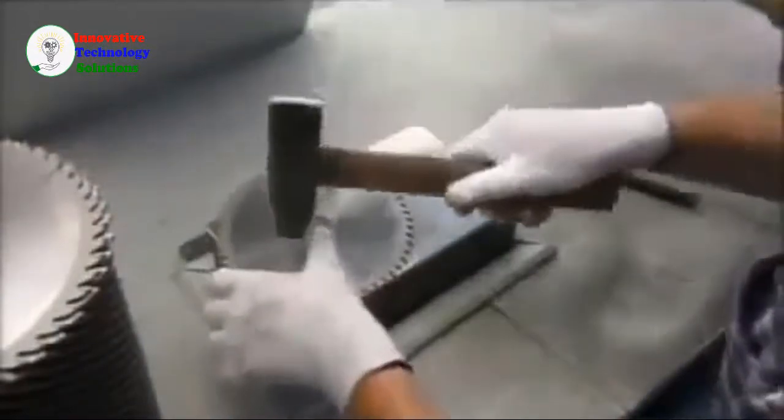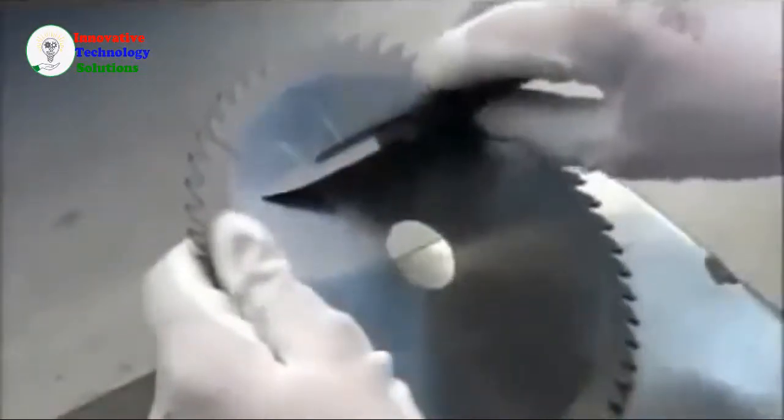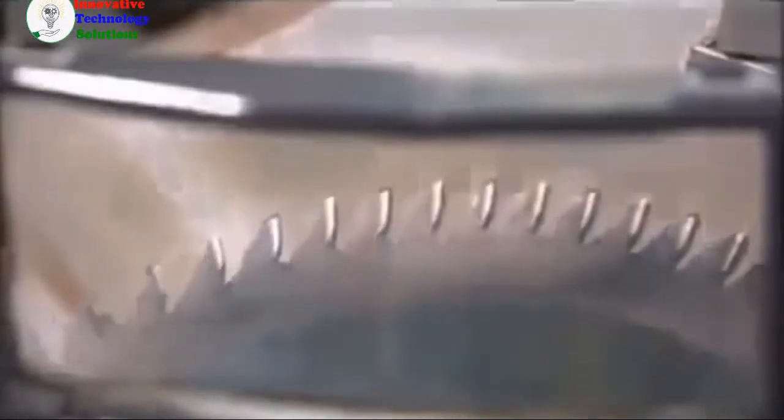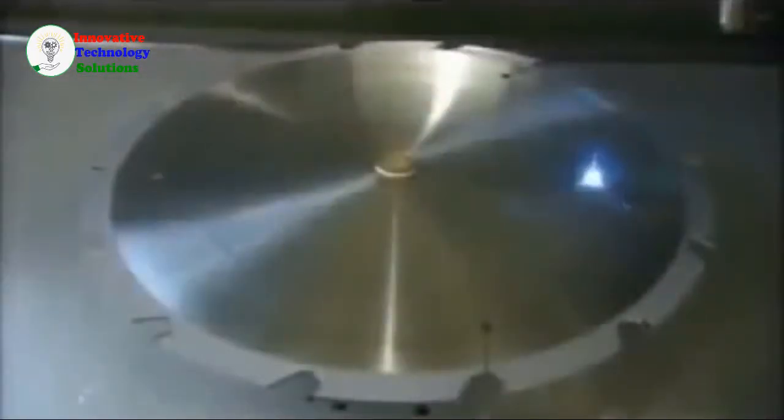Next, a straightening specialist pounds out any remaining bumps in the blade and double-checks it with a straight edge tool. He wipes off any smudges, then holds the blade to the light and examines it to confirm that it has no flaws. A laser then etches the company insignia onto the blade.